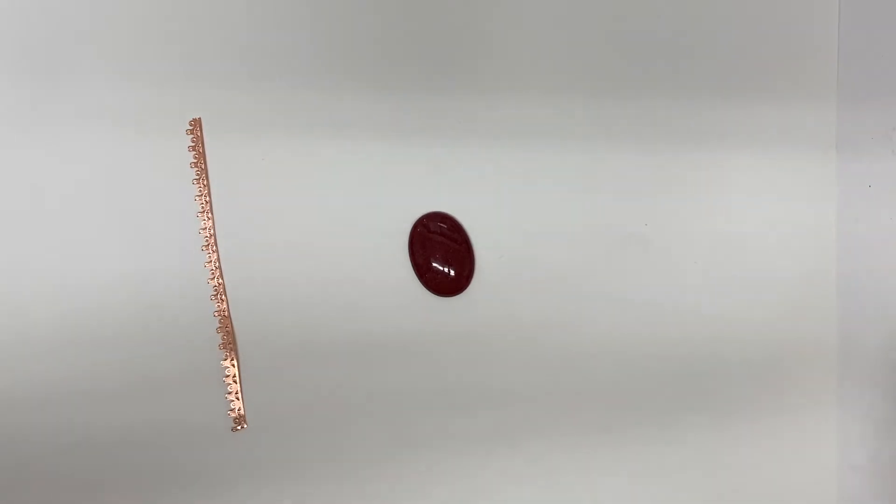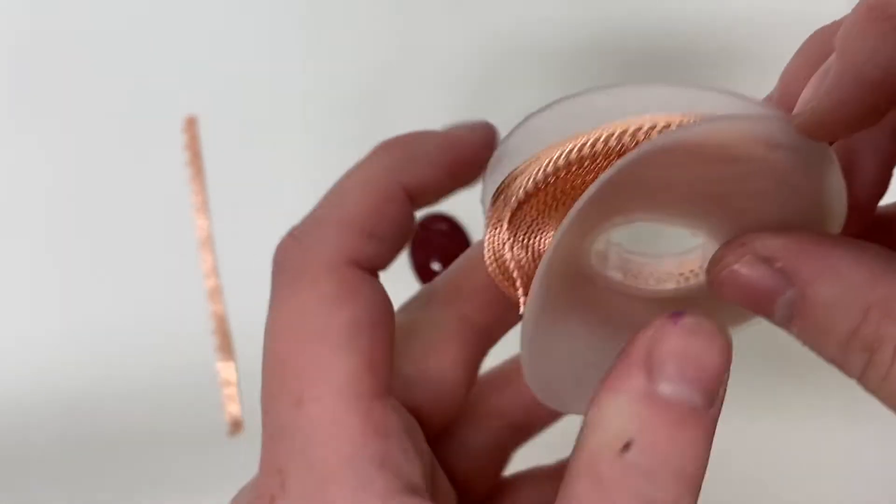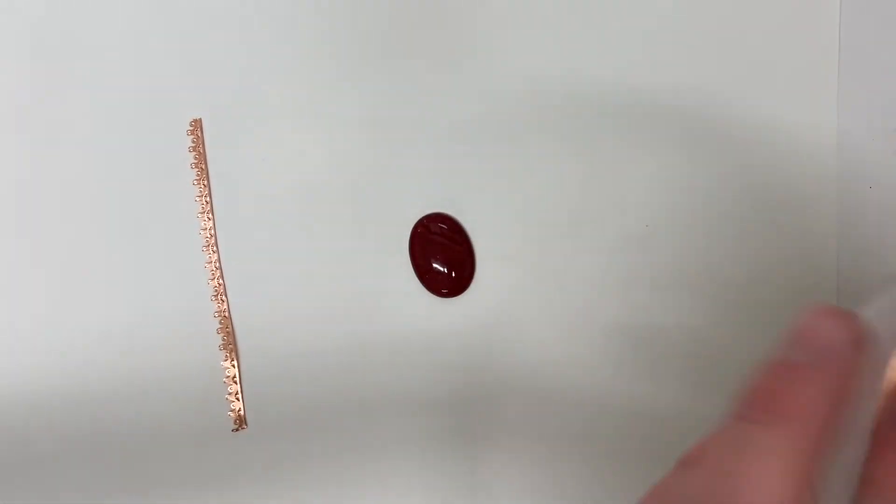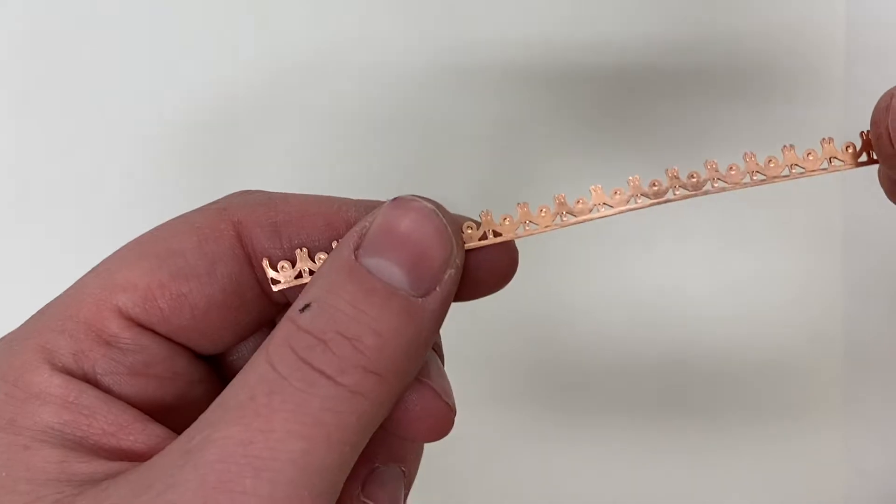The next stage of making a bezel set ring is to prep your bezel wire. Bezel wire, or sometimes called gallery wire, comes in a bunch of different styles and metals. I'm using this one for my project.